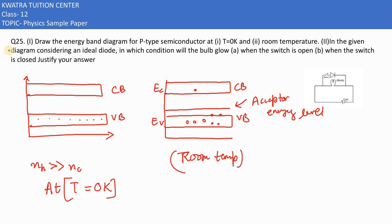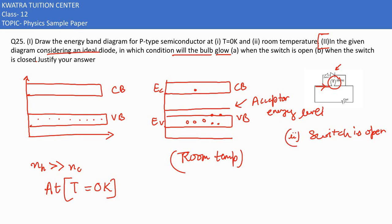In the second part, considering an ideal diode in the given diagram, the condition for the bulb to glow is when the switch is open — because then it will be forward biased and current will flow, so the bulb will glow.